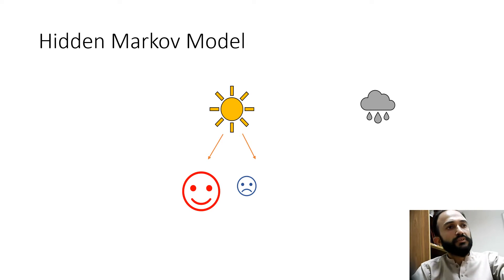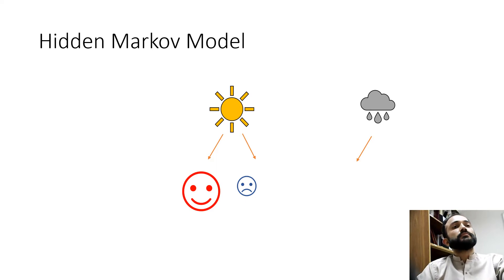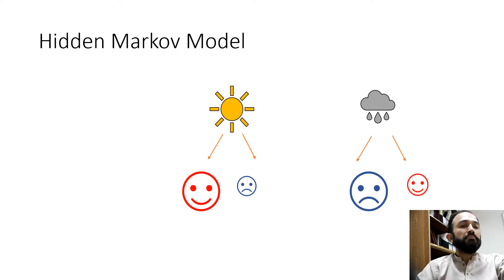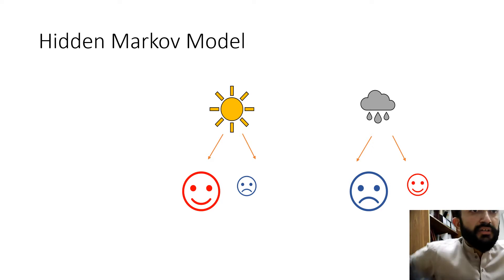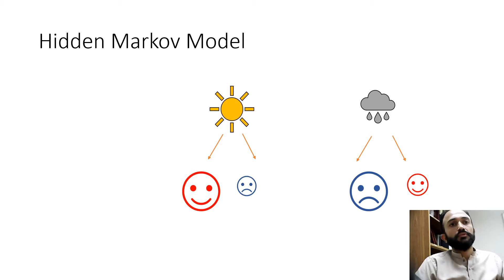There are two observations against a sunny day. Similarly, there is a rainy day — Bob is mostly sad on a rainy day, and sometimes he is happy on a rainy day. So there are two possibilities: most of the time Bob is happy on a sunny day, and most of the time he is sad on a rainy day.